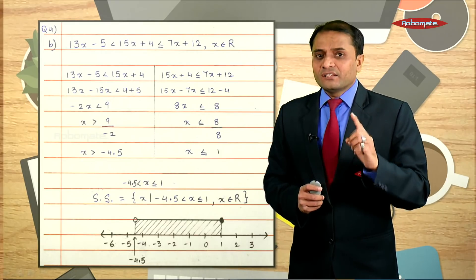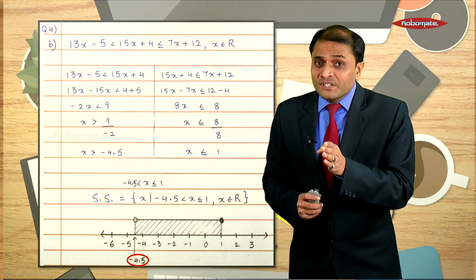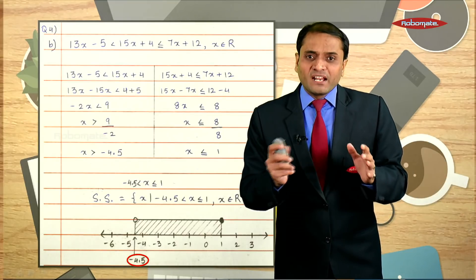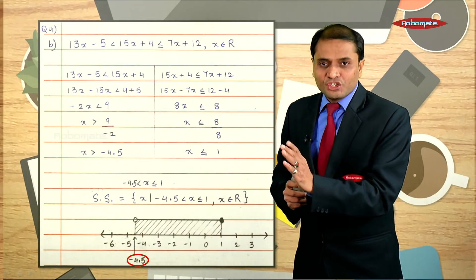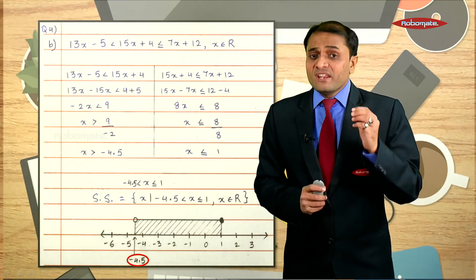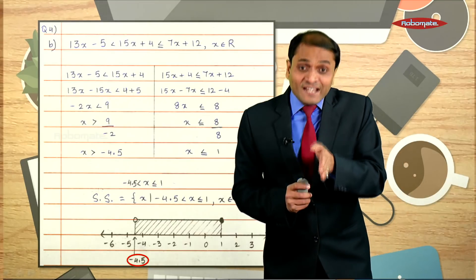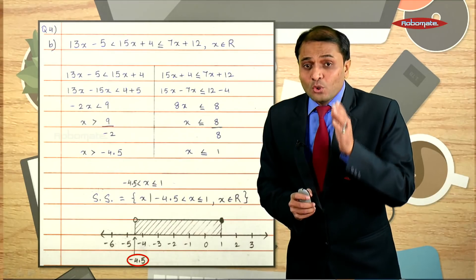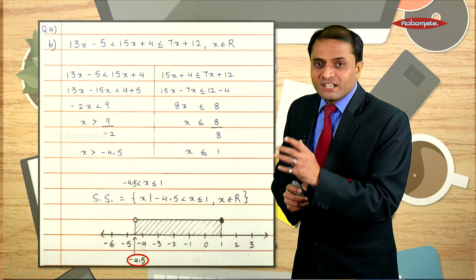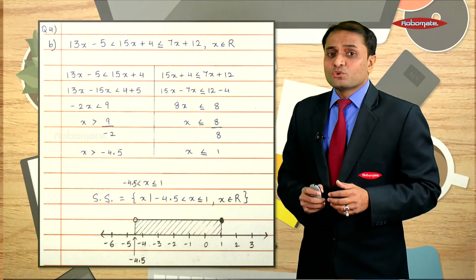Another very important point: if one end of the solution is minus 4.5, normally on the number line we show only integers such as minus 3, minus 4, minus 5. We never show minus 4.5 ordinarily, but since it is one end of the solution, you have to separately indicate minus 4.5 on the number line as shown here.